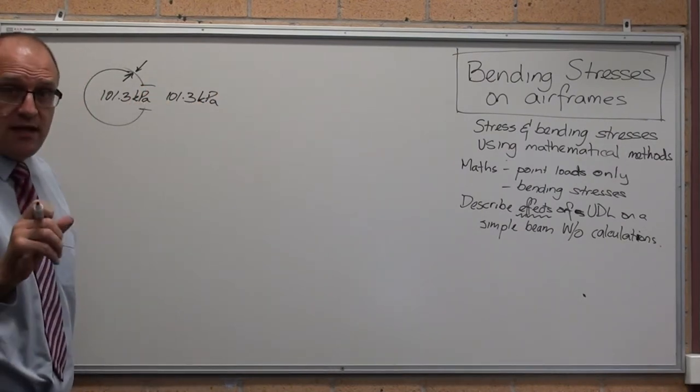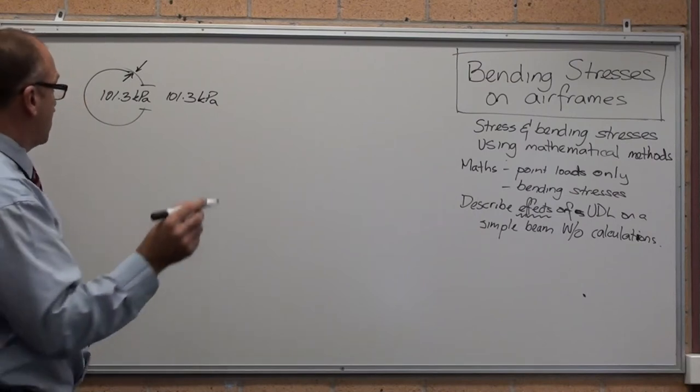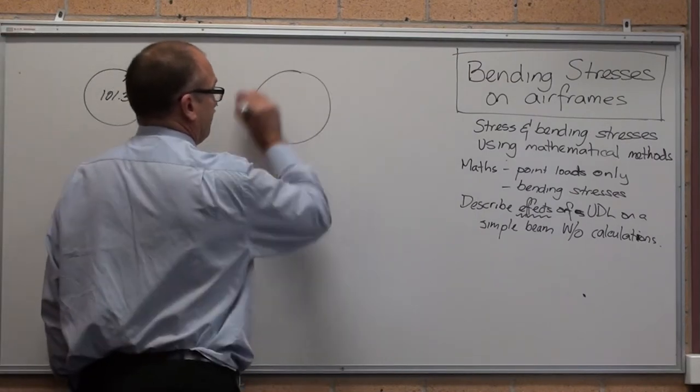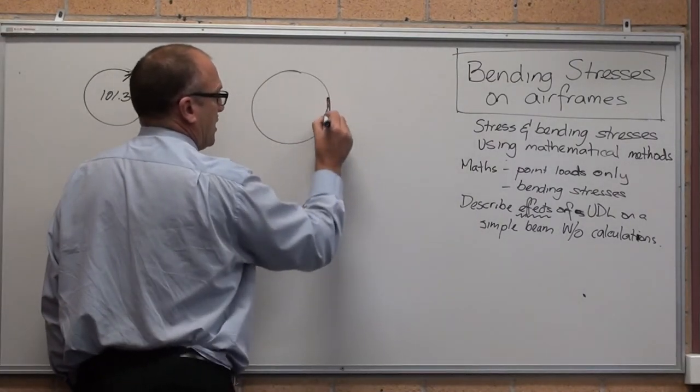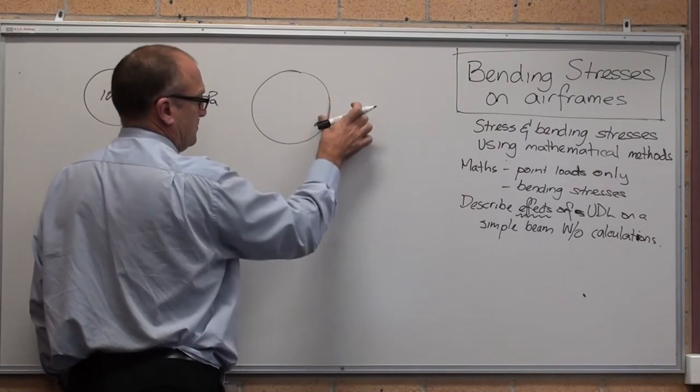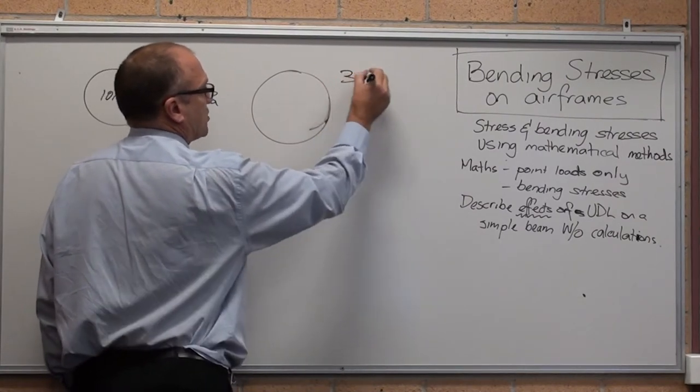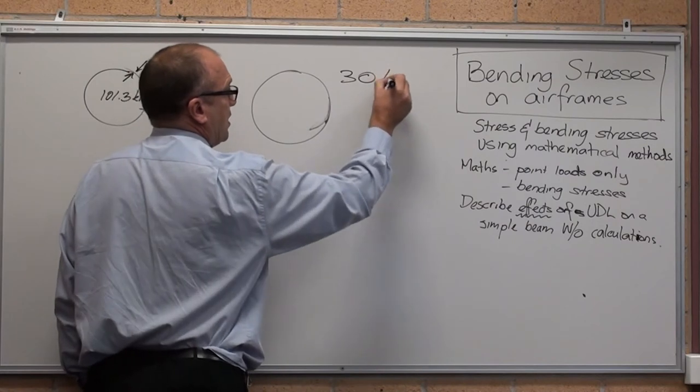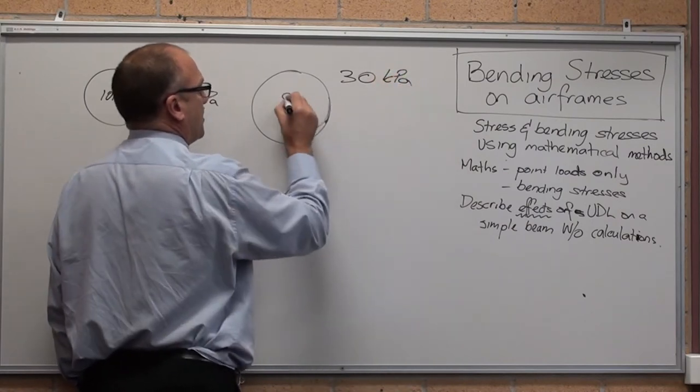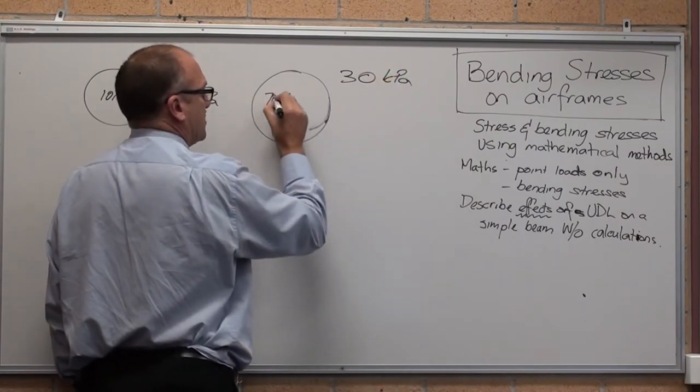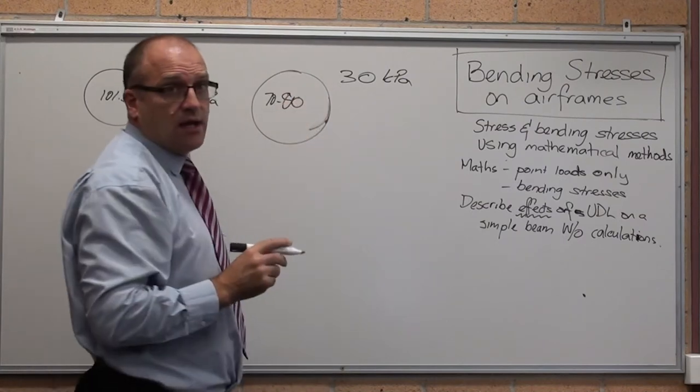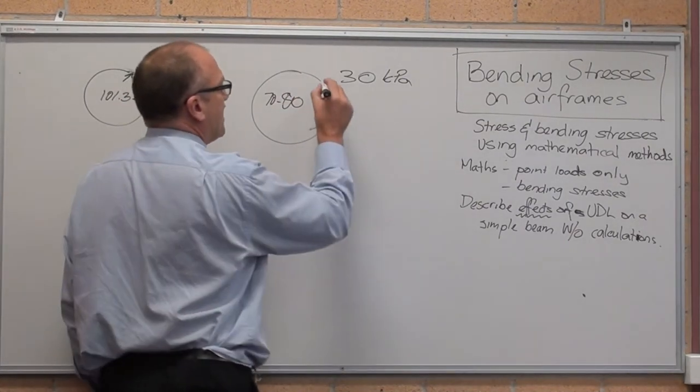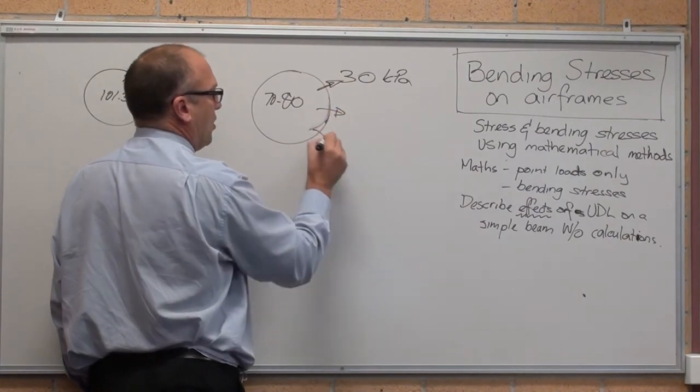When we go up to 30,000 feet, 10 kilometers up in the sky, the door's obviously closed. The pressure outside is 30 kilopascals. The pressure inside is around 70 to 80, so you can breathe. There is a massive stress that's blowing that out like a balloon.